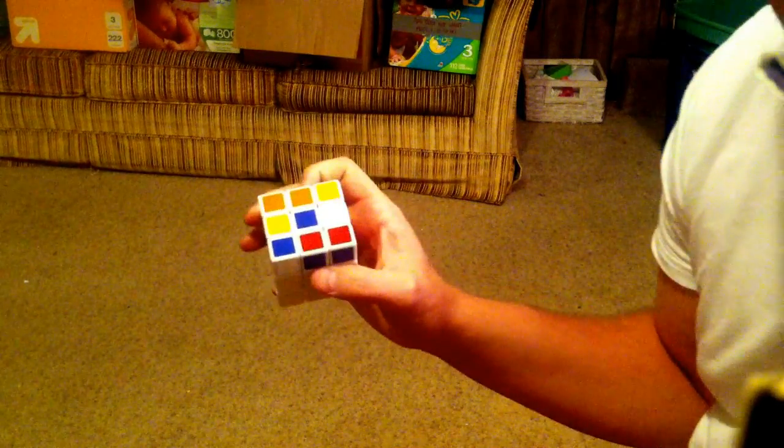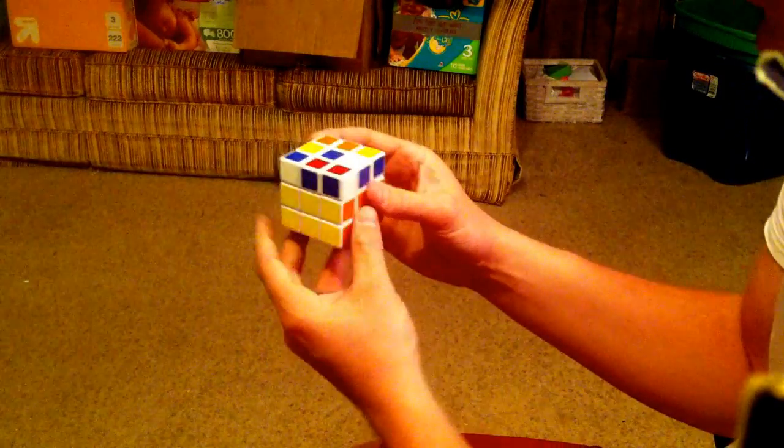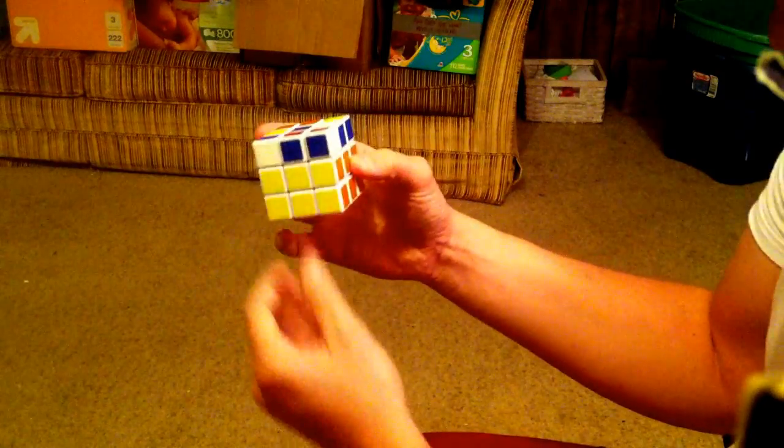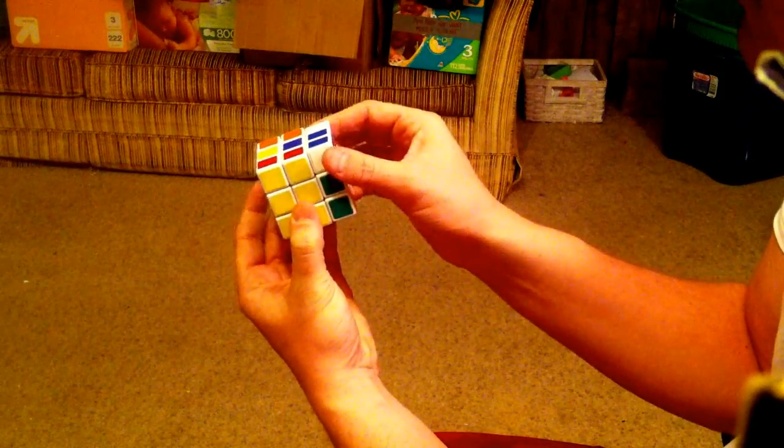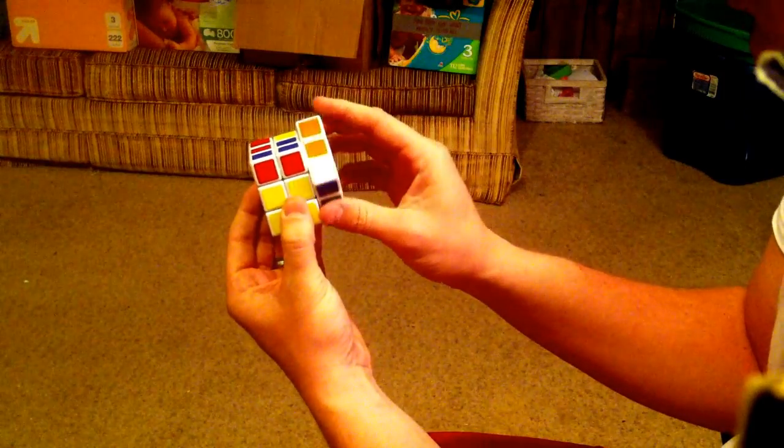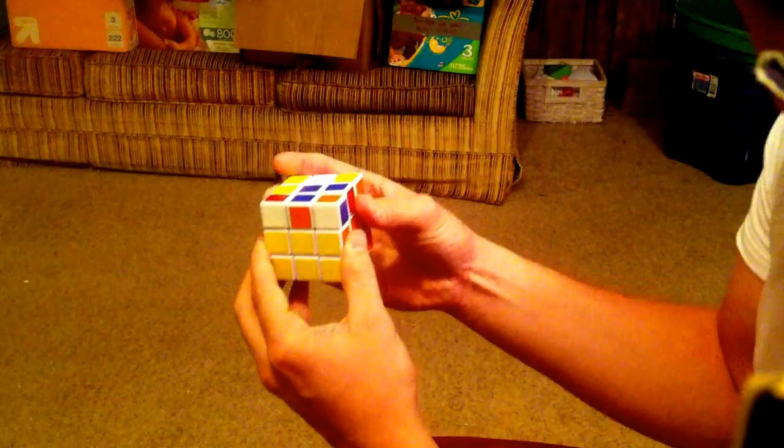Now, here's the algorithm, so go ahead and write this down. The algorithm, you're going to hold it like this. It doesn't really matter how you look at it, because there's only one piece. The algorithm is going to be F, R, U, R prime, U prime, F prime.